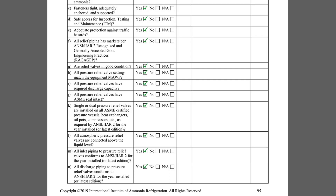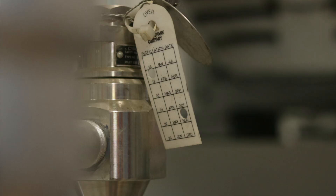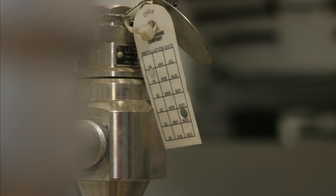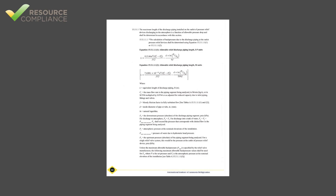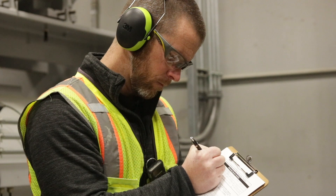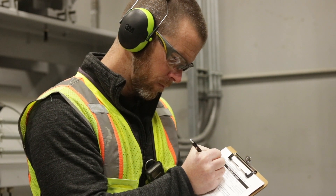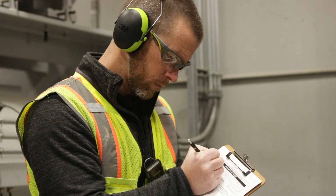Similarly, Item N inquires if the relief valve discharge termination piping conforms to the edition of IIAR Standard 2 applicable when the relief system was installed. The equation for assessing discharge piping for excessive back pressure can be a bit intimidating, but at minimum, the inspector must verify that there are no reducers in the termination piping.